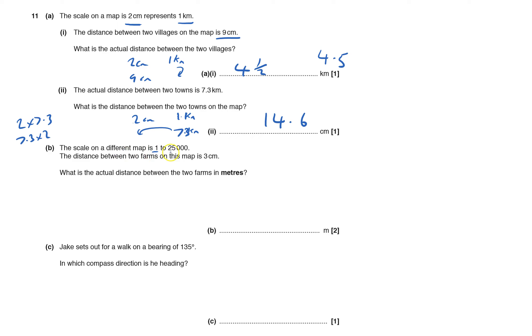The scale on a different map is 1 to 25,000. This one doesn't say what the units are, so they have to be the same units. One centimeter represents 25,000 centimeters. Converting - one centimeter divided by 100 to get meters gives 250 meters.